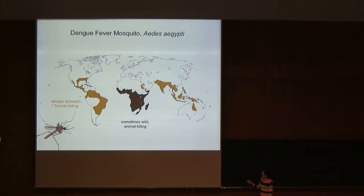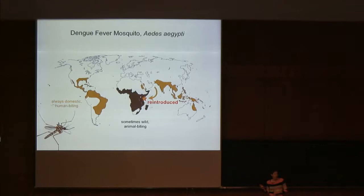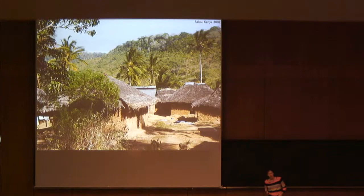These two forms of the dengue fever mosquito are described as distinct subspecies with slightly different body colors. Non-African human-adapted mosquitoes tend to be lighter brown, while African mosquitoes — which are sometimes wild and non-human adapted, but also sometimes live in cities and bite humans — tend to be darker black. There is only one place in the world where these two subspecies coexist: along the coast of East Africa, most likely due to reintroduction of non-African mosquitoes through Arab trade over the past 2,000 years.